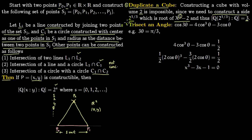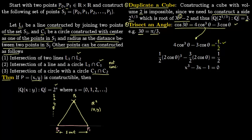The second problem was trisecting an angle. In general it is not possible to trisect an angle. Using the trigonometric formula cos(3θ) = 4cos³θ − 3cosθ, we show that π/3 cannot be trisected. Setting 3θ = π/3, we get cos(3θ) = 1/2. Substituting x = 2cosθ, the equation becomes x³ − 3x − 1 = 0.